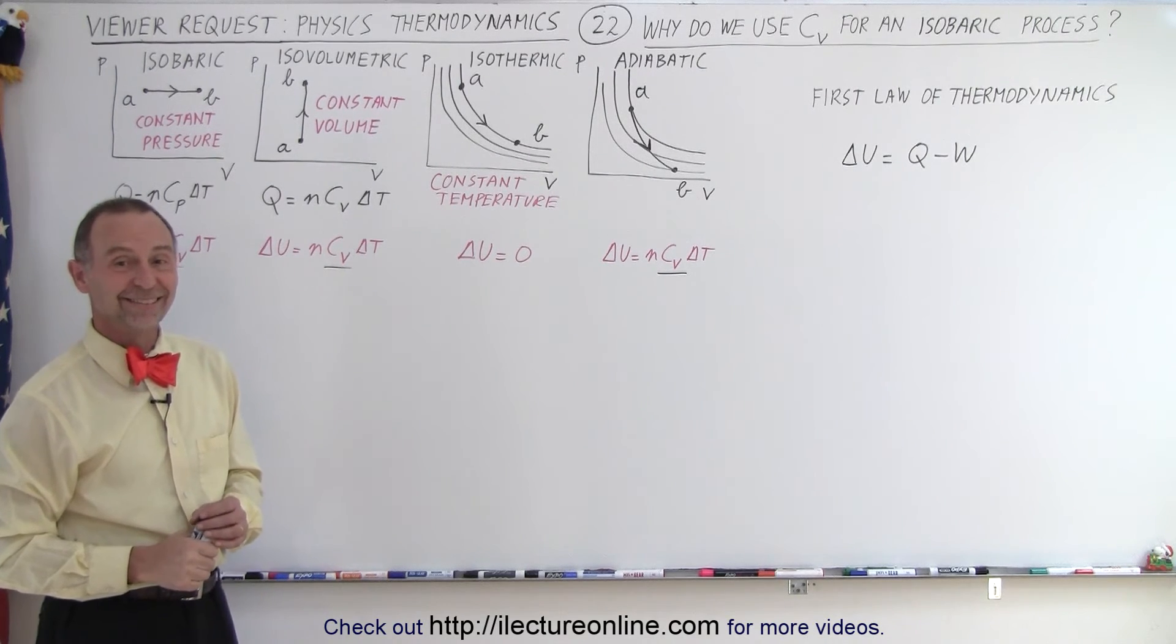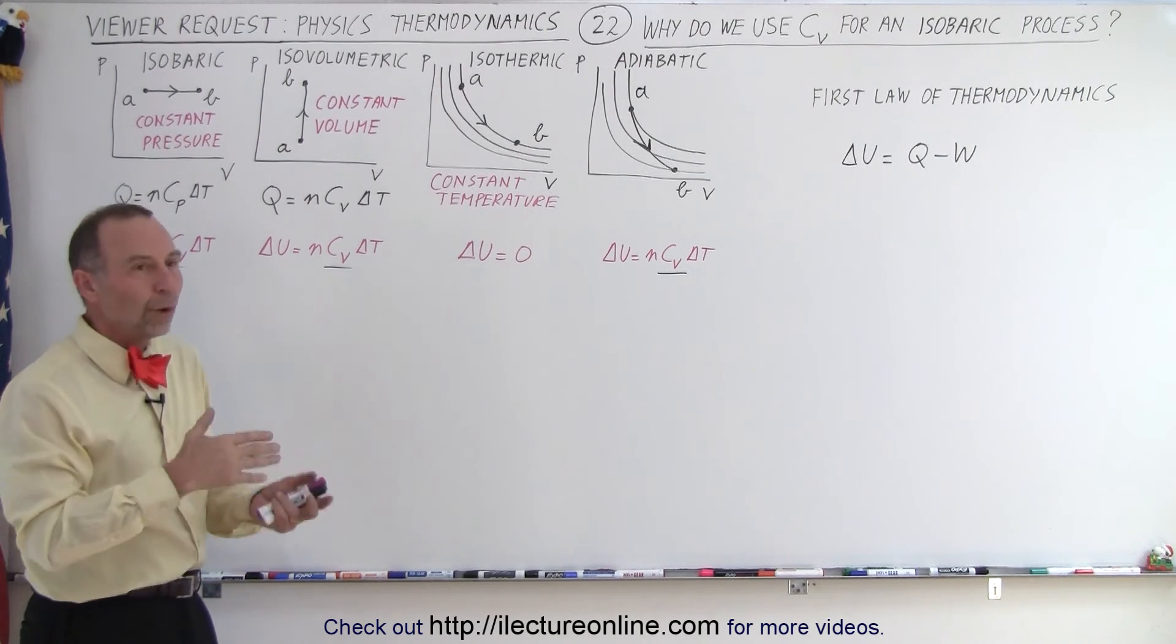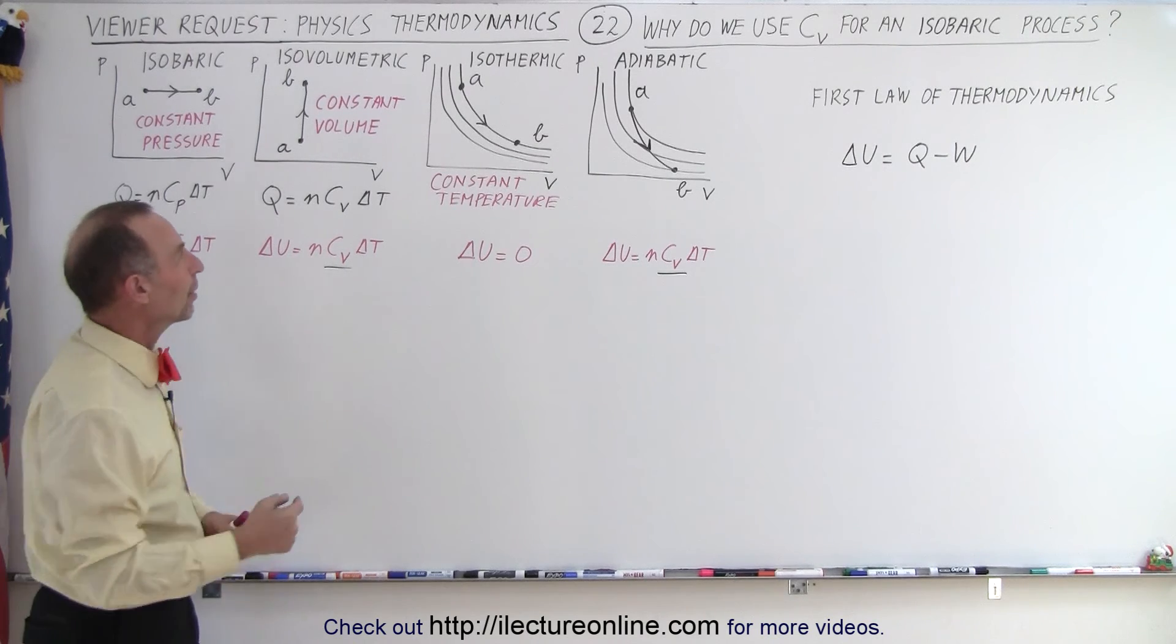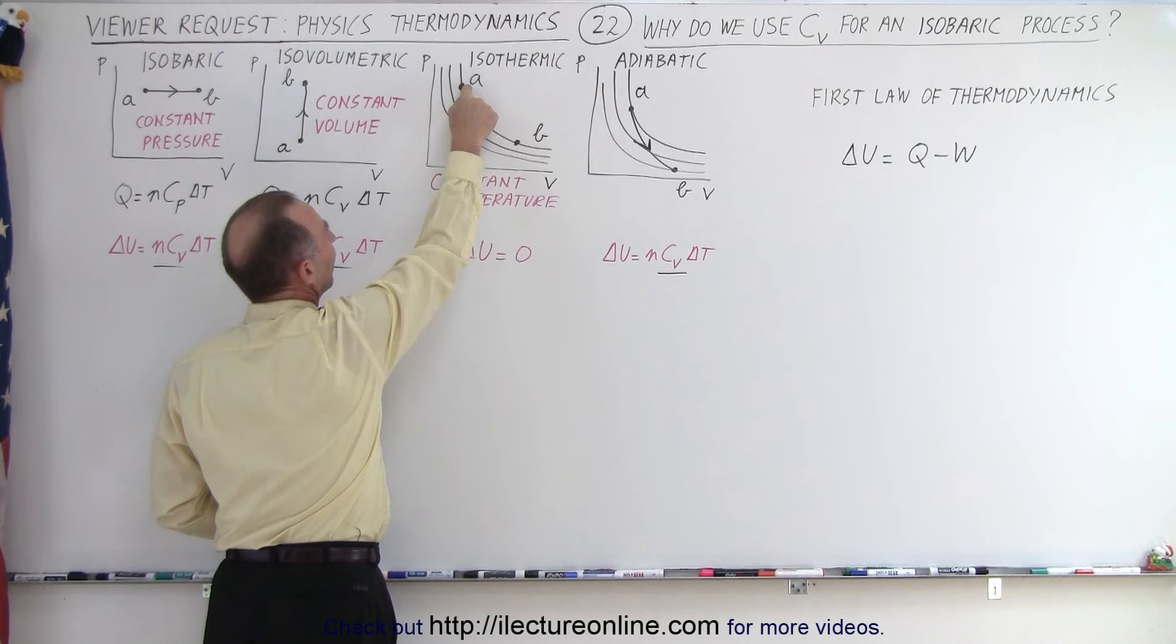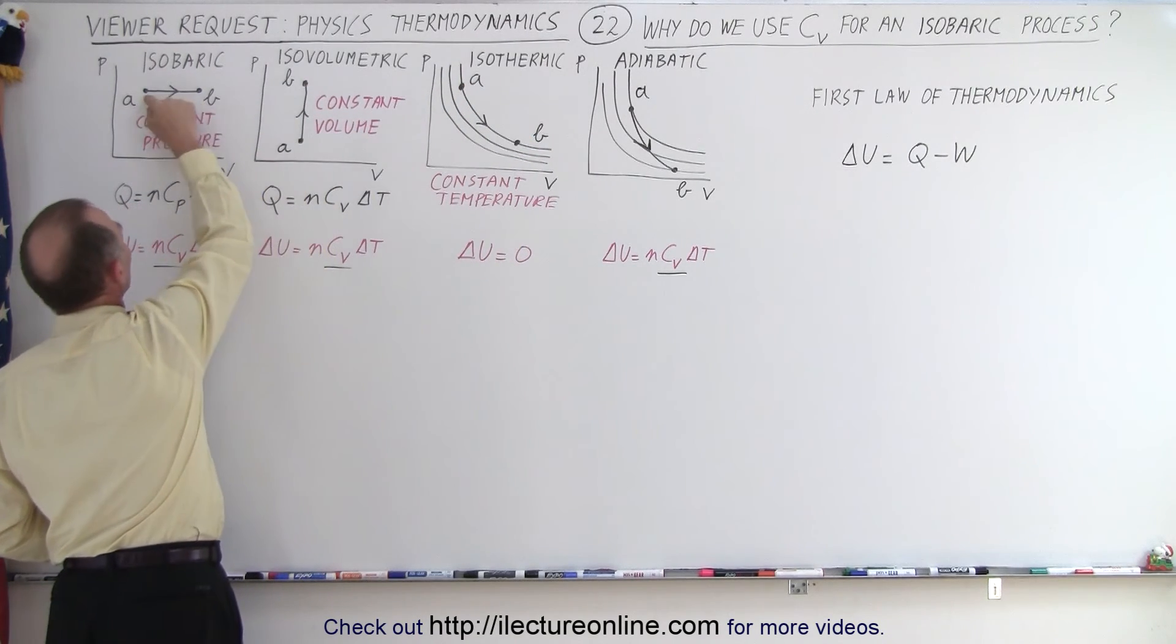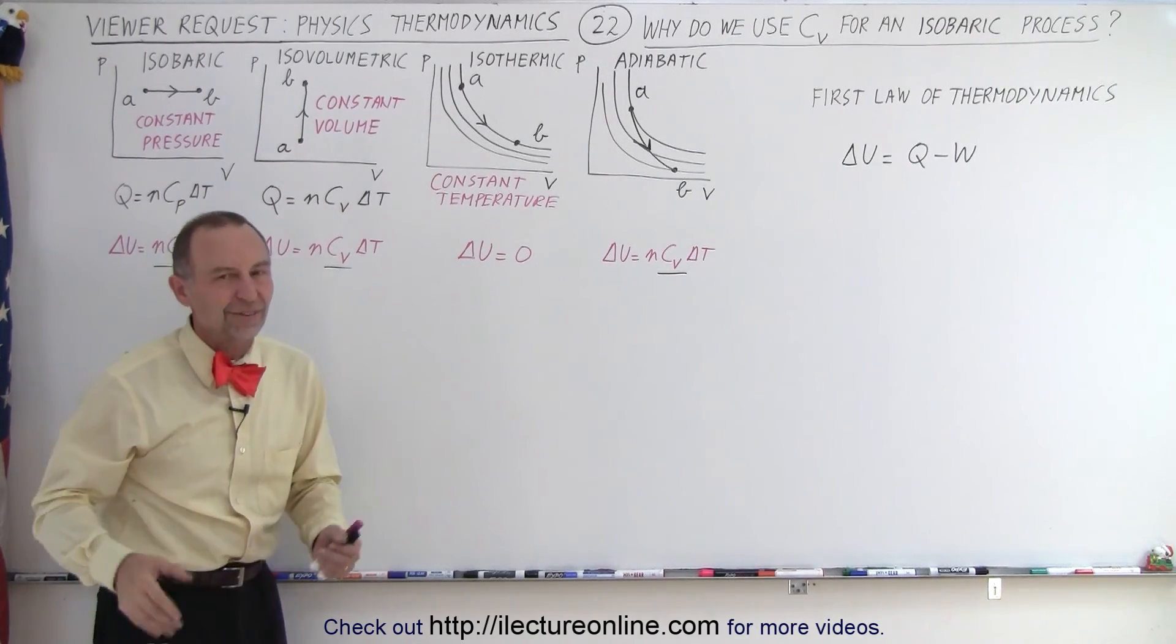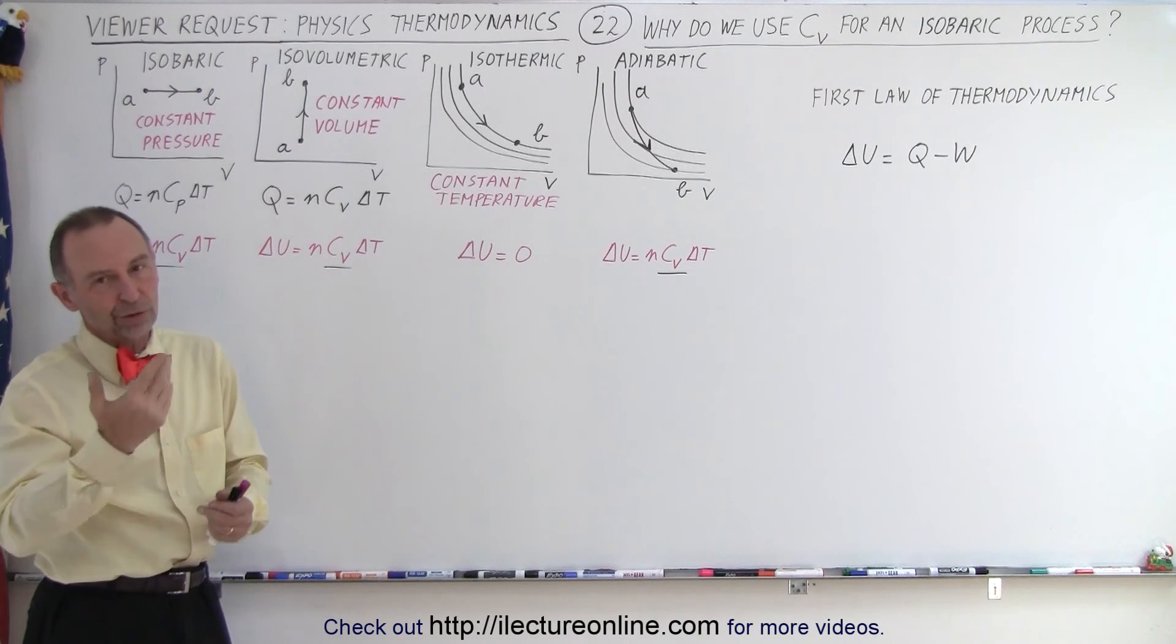The A to B thing, does that have any sort of meaning? Well, yes. The A to B, we use one to two or A to B. It's a process. We start at A and we go to B. So the gas is in this state and then it goes to this state. The gas is in this state and it goes to that state. It's in this state and it goes to that state. So that's typically what that represents. You go from one state to another state, from A to B or from one to two.